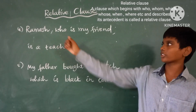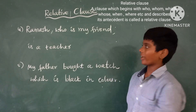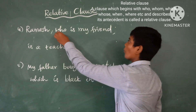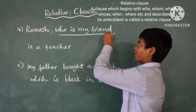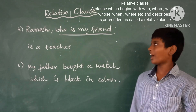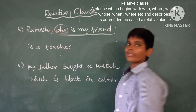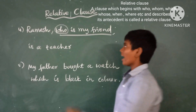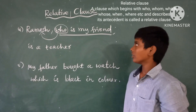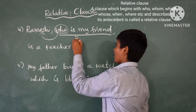Fourth example: Ramirez, who is my friend, is a teacher here. 'Who is my friend' is a Relative Clause. Why? Because it begins with 'who' and describes its antecedent, Ramirez.